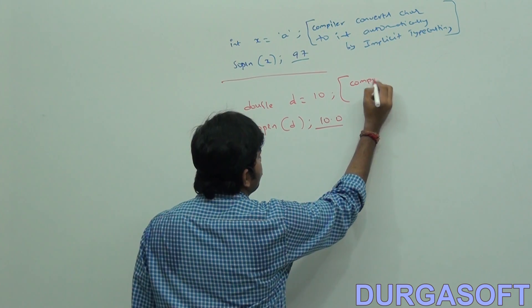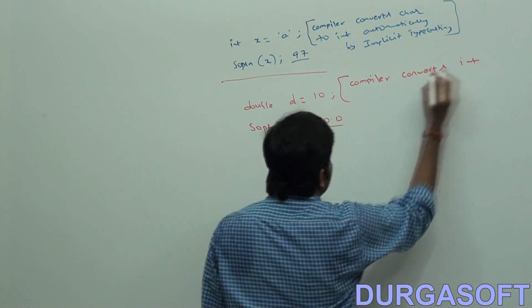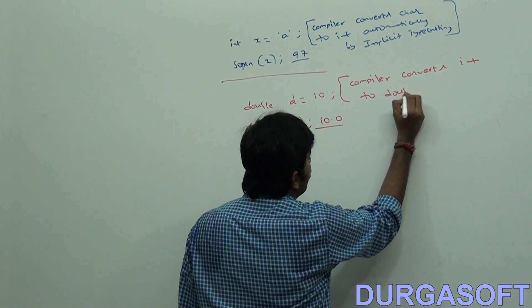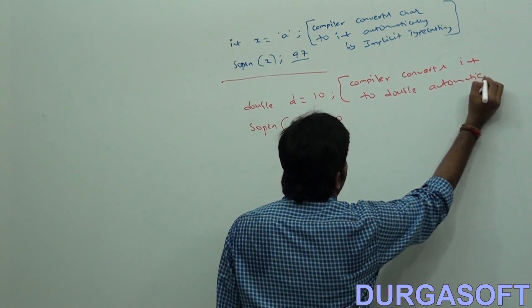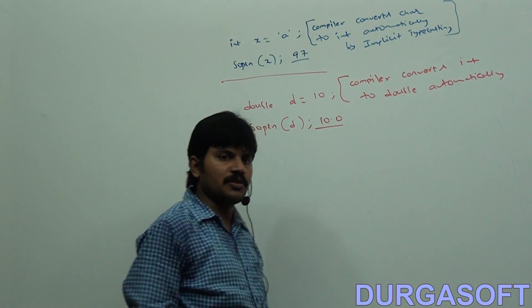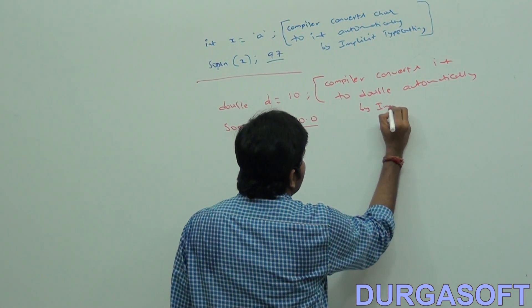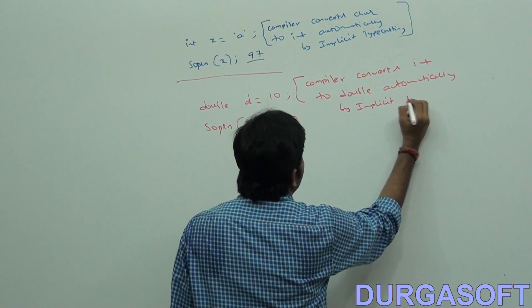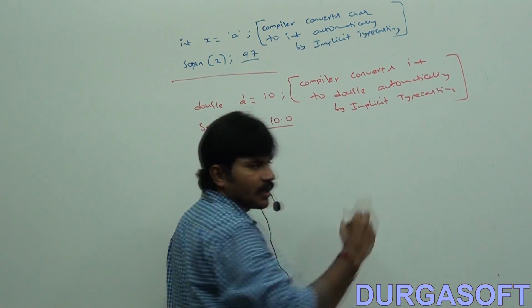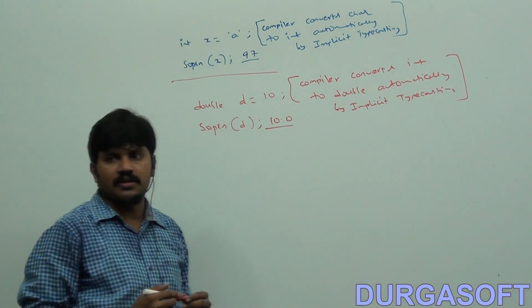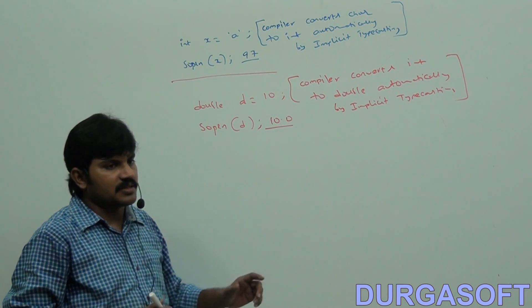The compiler converts int to double automatically by implicit typecasting. So who is responsible to perform implicit typecasting? The compiler is responsible.